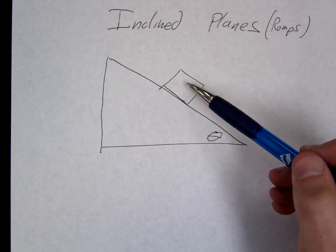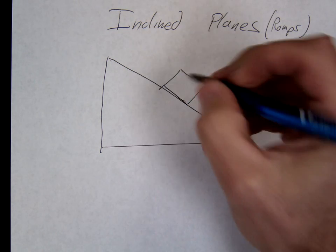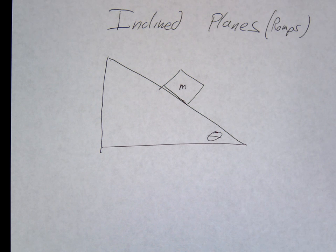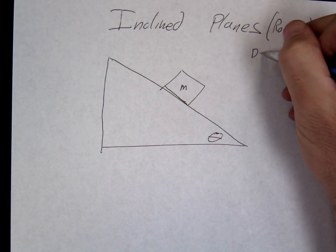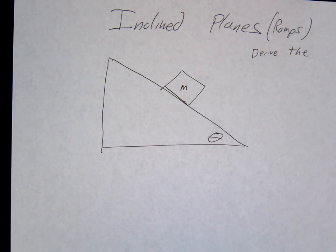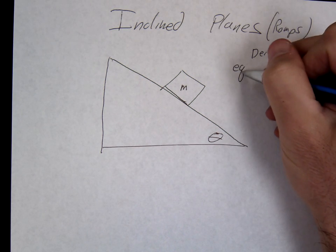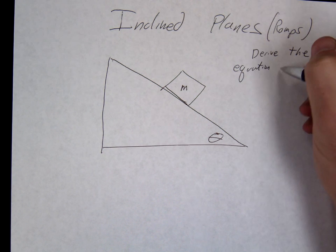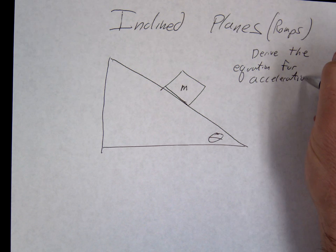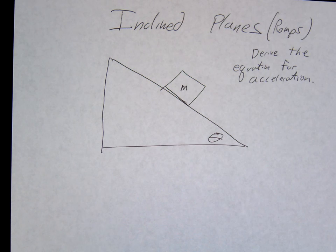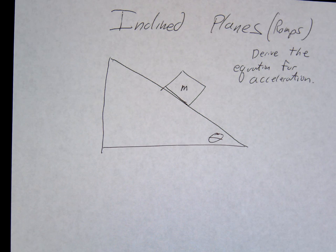So we have our problem here. We have an object on a ramp. I'm going to do this with just variables today. Again, I want you to get used to this process. So for example, I might ask you to derive the equation for acceleration. In other words, what is the acceleration? How fast is the object accelerating down the ramp?